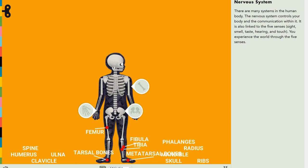Here's your pelvis, aka your butt bones. Here is your femur — the thickest, longest, and strongest bone in your body. You could be asking why isn't the spine the thickest, longest bone in the body. That's because there are 206 bones in the body, and the spine is made up of a ton of them.